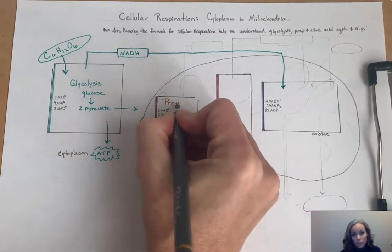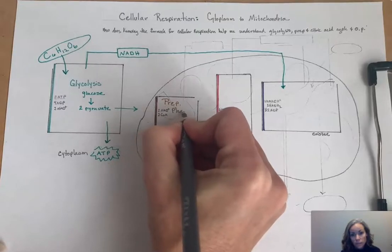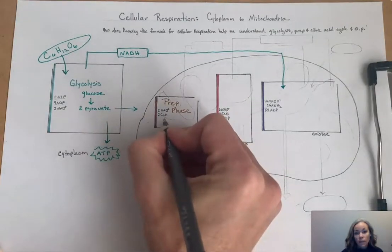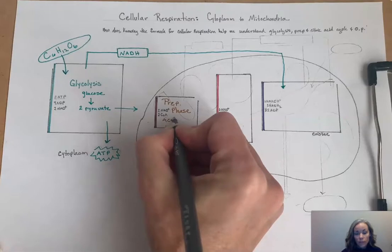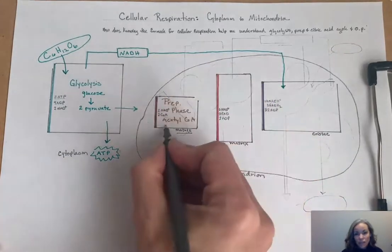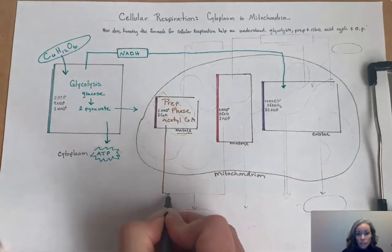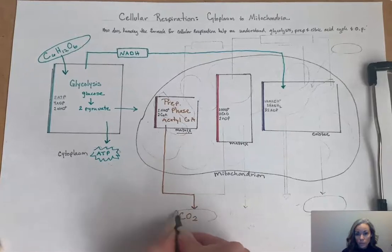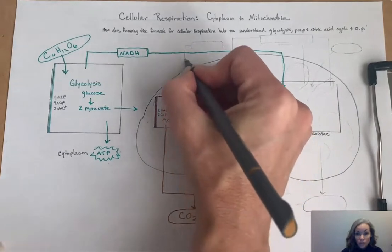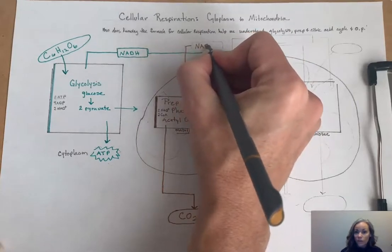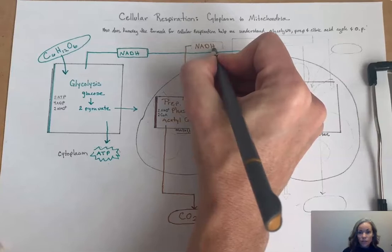The next phase is the preparatory phase. I'm going to abbreviate it here. It's also called the link phase or link reaction. It happens in the matrix of the mitochondria. It uses that pyruvate to make acetyl-CoA, among a lot of other reactions that happen, but that's the important one that we need to remember. It does produce CO2. So the preparatory phase produces CO2, one of the outputs of cellular respiration, and it also produces NADH, just like glycolysis, and sends it straight over to oxidative phosphorylation, to the last stage of cellular respiration.